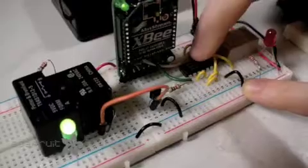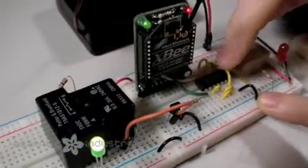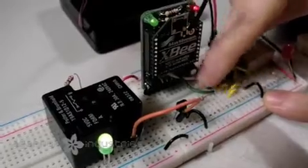And here, because there's two inputs, I just used a standard hex buffer to buffer the input from the XB to the latch.